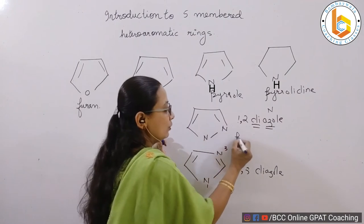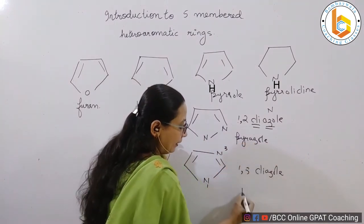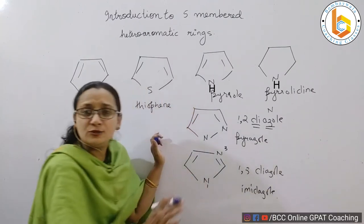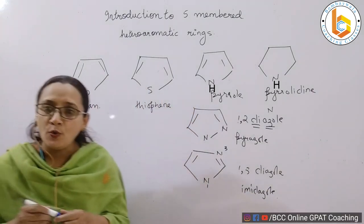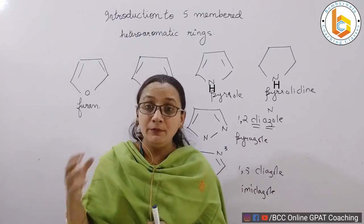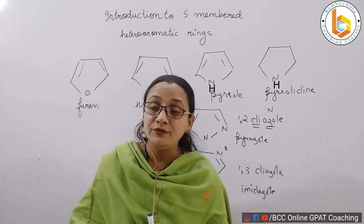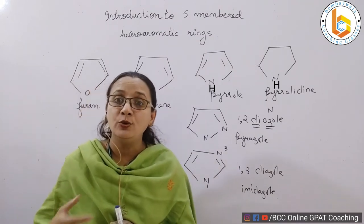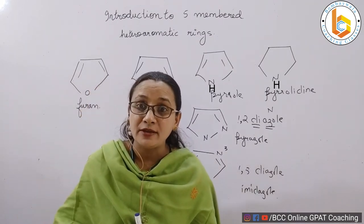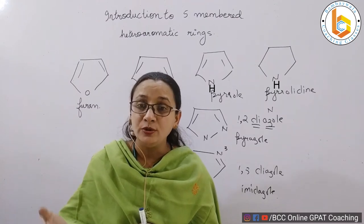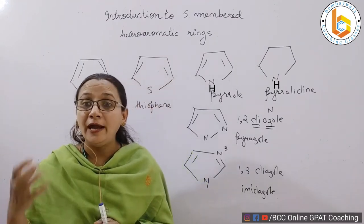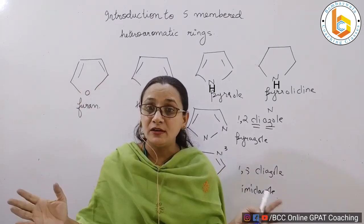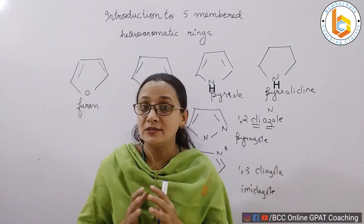Imidazole is present in so many structures — for example, mebendazole, which is an antihelminthic drug; ketoconazole; clotrimazole; cotrimoxazole; and secnidazole. These are all antifungal drugs containing imidazole. There are many molecules in medicinal chemistry with this structure, but right now we are focusing on remembering the heteroaromatic rings.